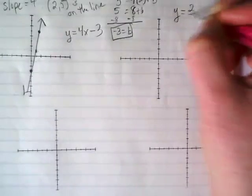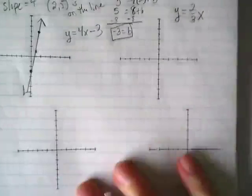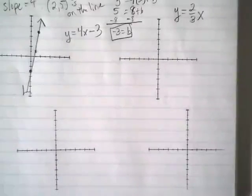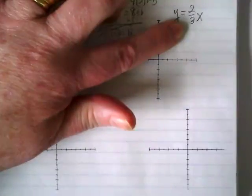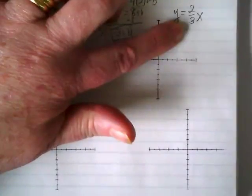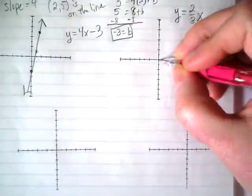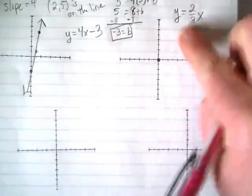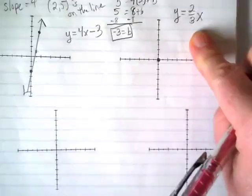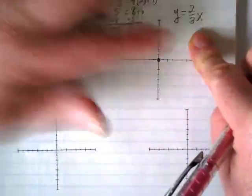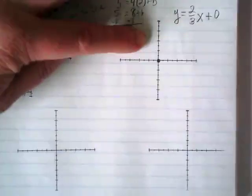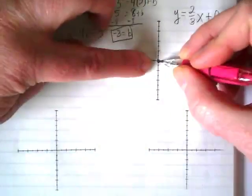y is equal to 2 thirds x. What's my slope? 2 thirds. Do you see a plus b here? No, we don't. So we start at the origin. This equation is y equals mx plus b, but it's also a direct variation. Because we're going through the origin. So when there's no plus b there, that means that the y-intercept is plus 0. We can put our first point here.